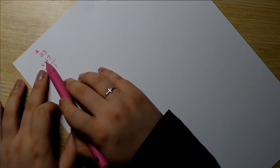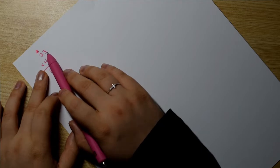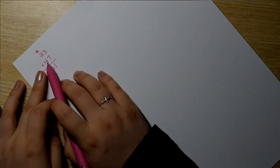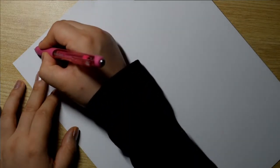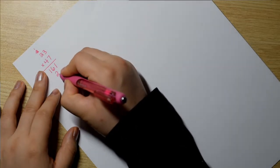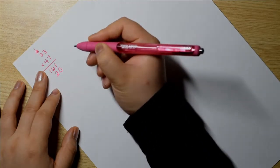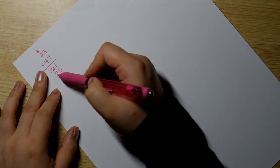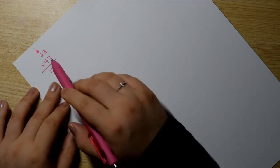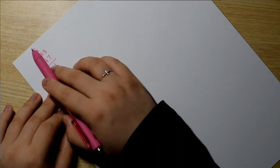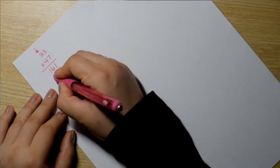Then 4. 4 times 3 is 12. But since it's this 4, I'm actually going to put the 1 here and then put a little placeholder 0. And then 12.